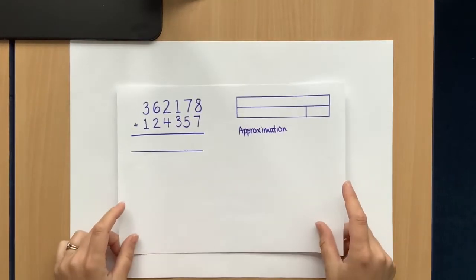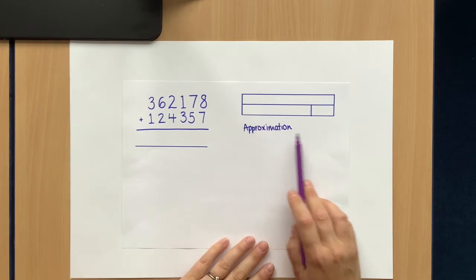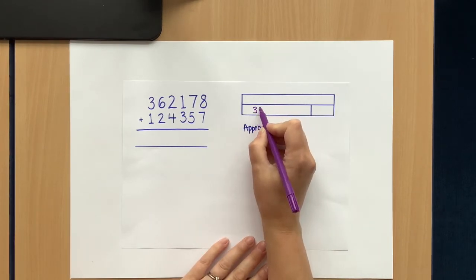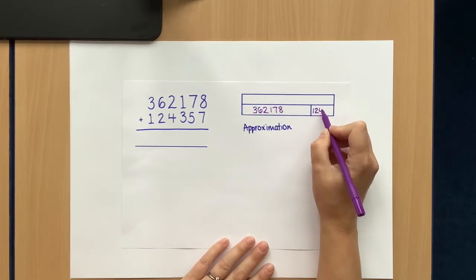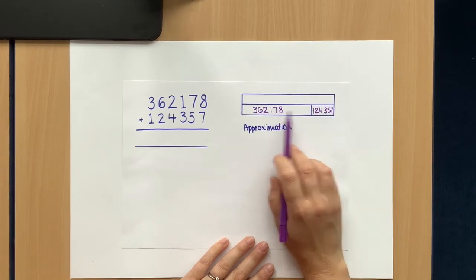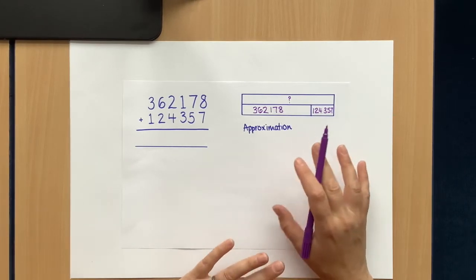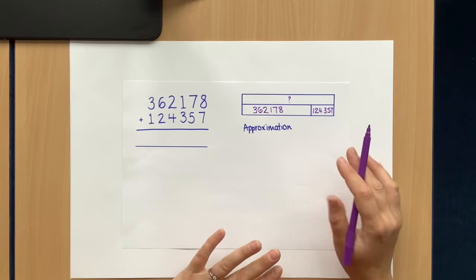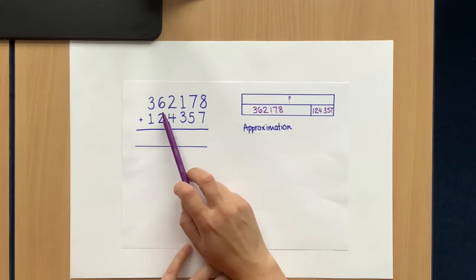First of all, here is an example of an addition calculation. 362,178 add 124,357. I'm just going to fill in this bar model here, because sometimes that can help you with which inverse you use to check your answer. So we've got two numbers added together, and we're wanting to find that one. A good way to check your answer before you've even done it, check if it's in the right ballpark, is to do an approximation.